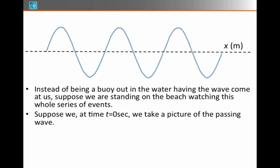Let's suppose at some snapshot in time, let's say zero seconds, we take a picture of the passing wave. We would see a picture much like the curve that we just saw up above here. We see crests and troughs. We have the ability to see the entire wave, at least for that one snapshot in time.